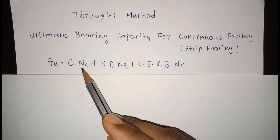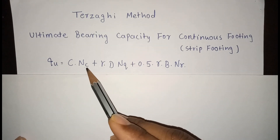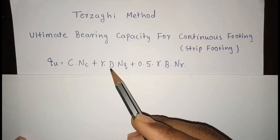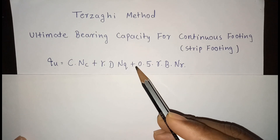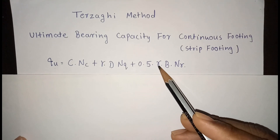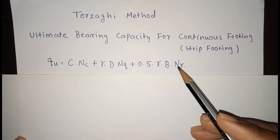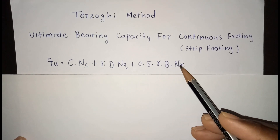Here, C is the cohesion and NC is a bearing capacity factor. γ is the unit weight of the soil, D is the depth of the foundation, NQ is a bearing capacity factor, B is the width of the footing, and Nγ is also a bearing capacity factor.